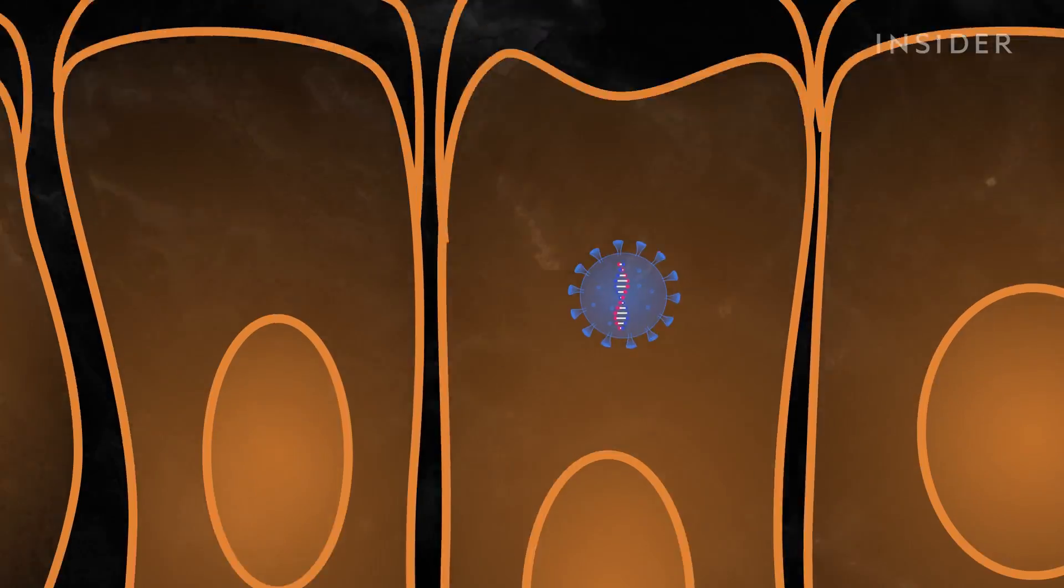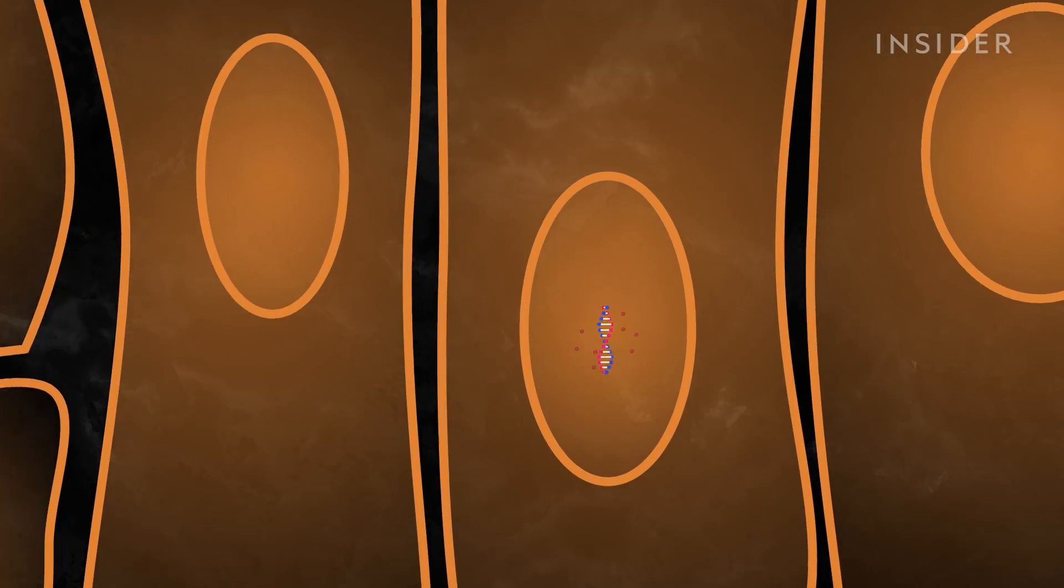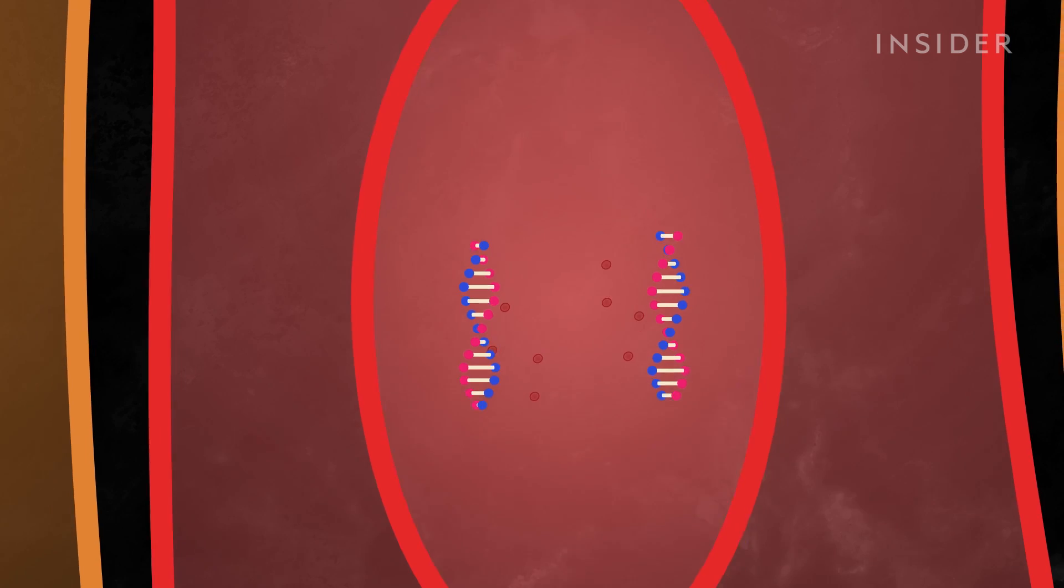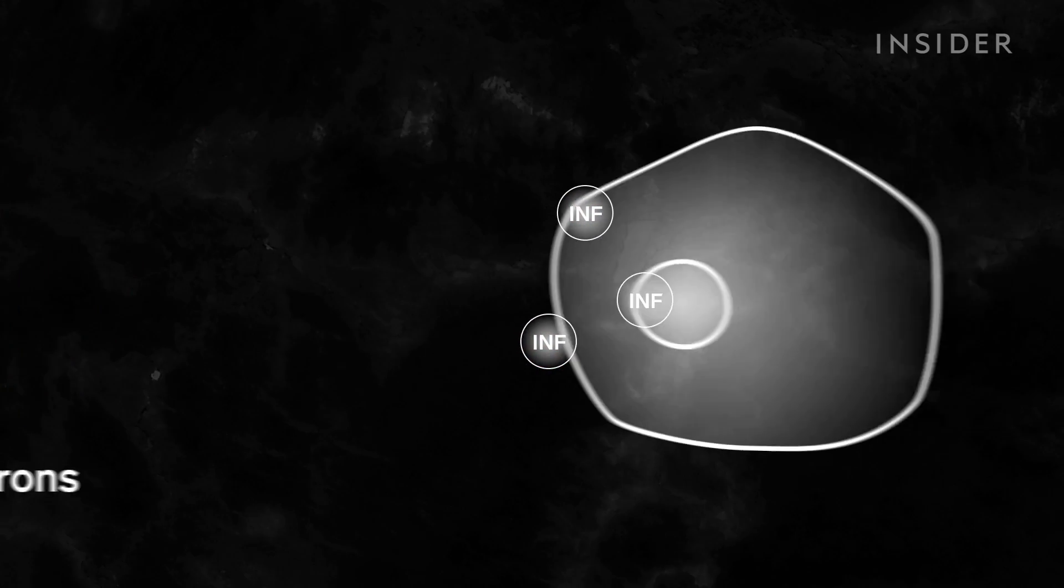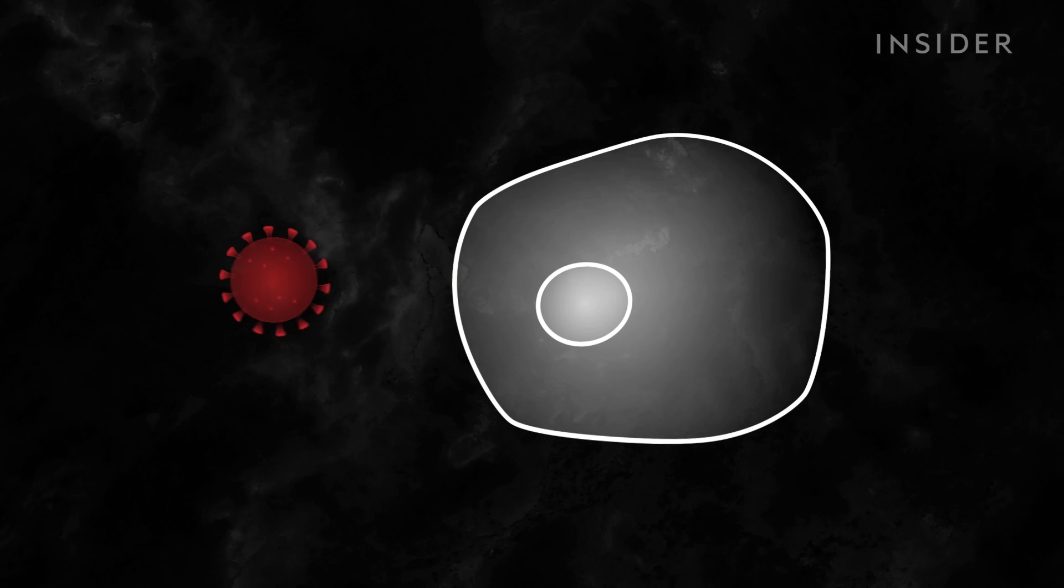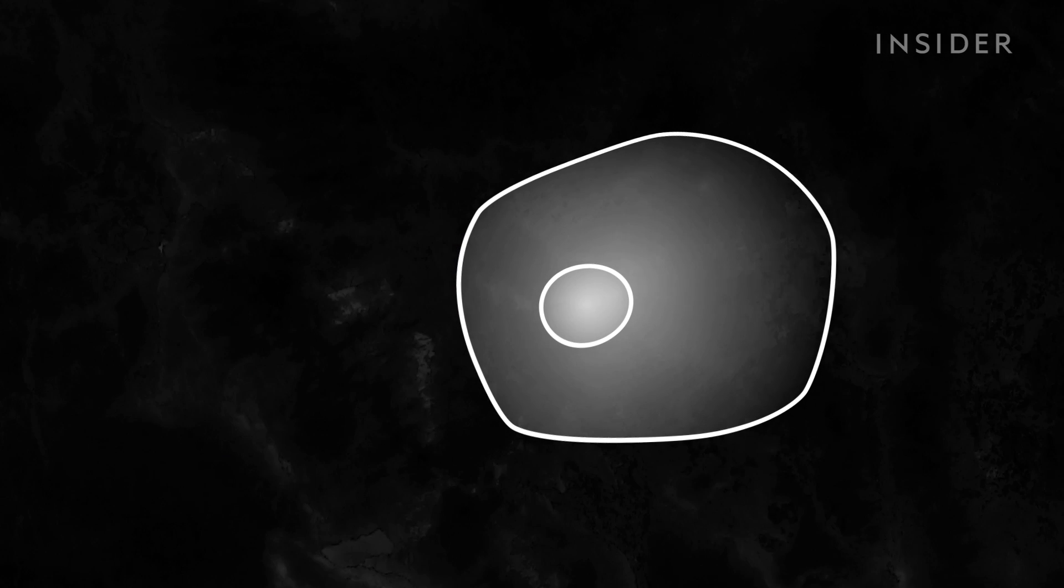Once inside the new host cell, an infection will only be successful if the virus can replicate. Typically, infected cells will release interferons, proteins that stop the virus from replicating within the cell and in nearby cells, which contain the infection and stop it from spreading to new cells.